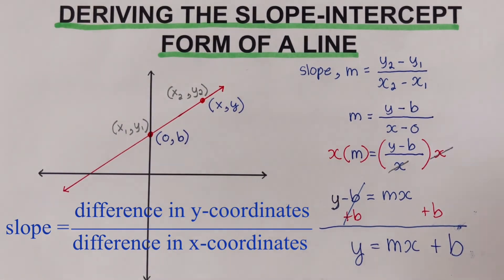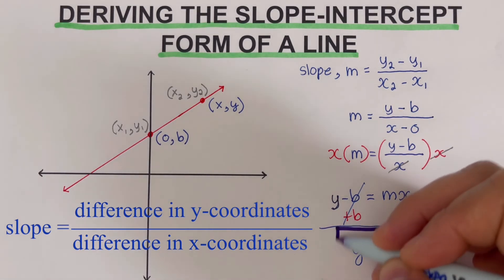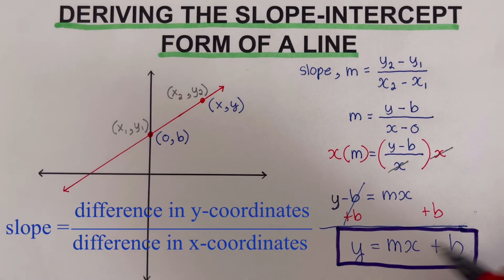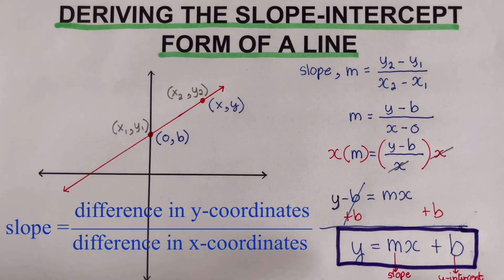So we already have derived the slope-intercept form of the line, where our m is the slope and our b is the y-intercept. So I'm going to label that down here. So there you have it, the slope-intercept form of a line.